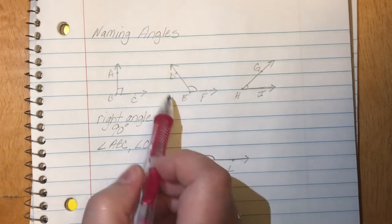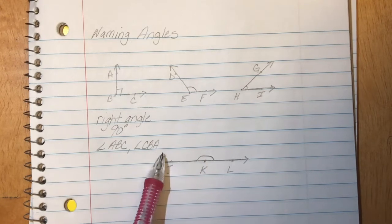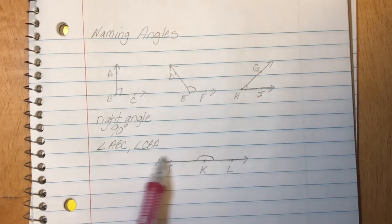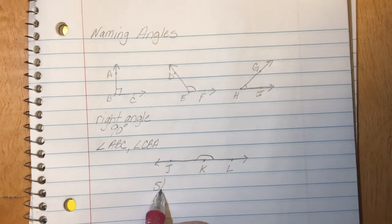Let's take a look at this angle down here. Now you'll notice this angle looks very much like what you know as a straight line. That's why we call it a straight angle.